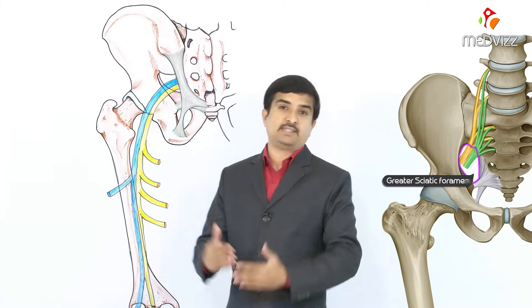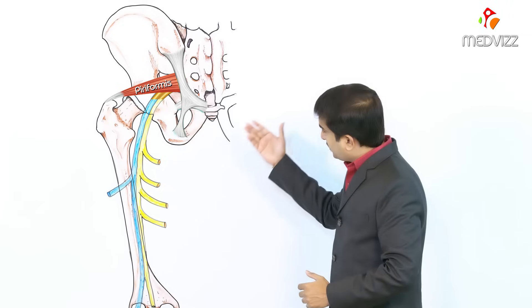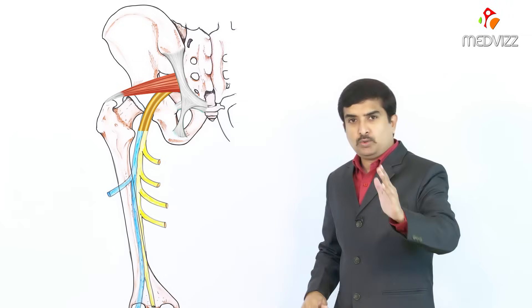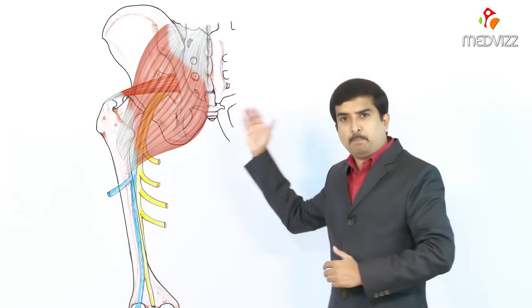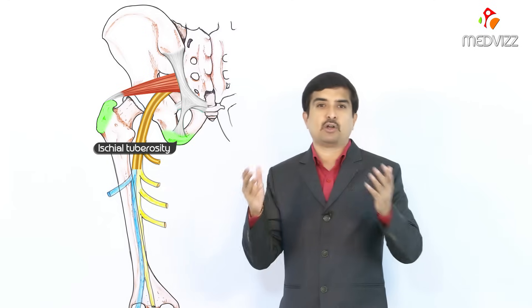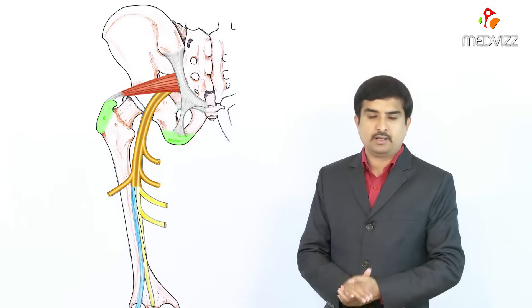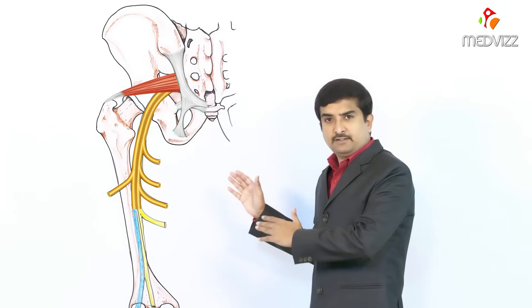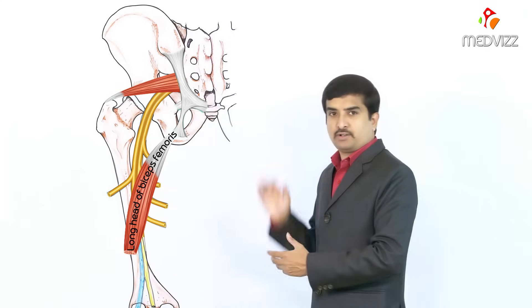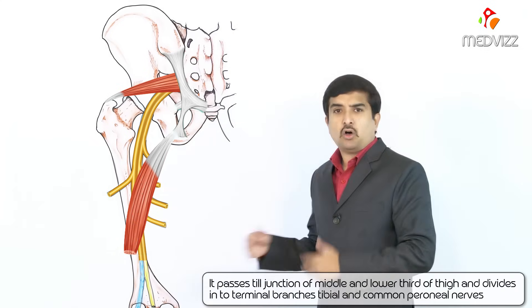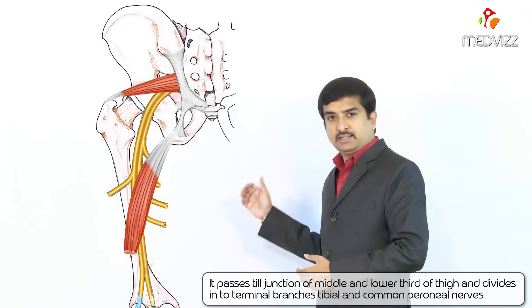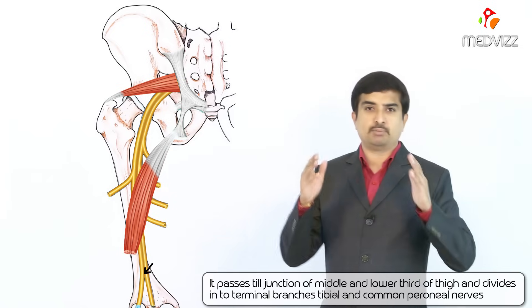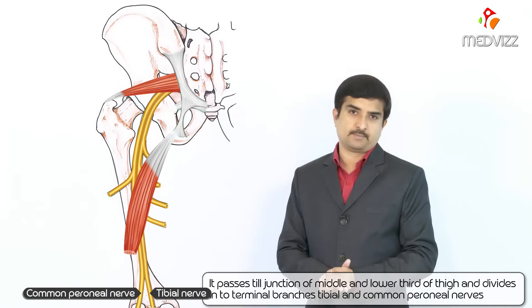After its formation, the sciatic nerve passes through the greater sciatic foramen below the piriformis to enter into the gluteal region. It descends down and slightly laterally under the cover of the gluteus maximus, midway between the greater trochanter and the ischial tuberosity, along the back of the thigh. In the posterior aspect of the thigh, the nerve is crossed by the long head of the biceps femoris and passes till the junction of the middle and lower third of the thigh, near the popliteal fossa, where the nerve divides into its two terminal branches: the tibial and the common peroneal components.